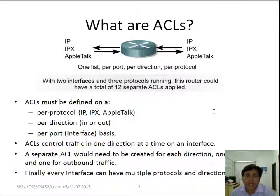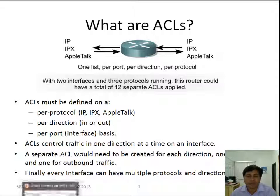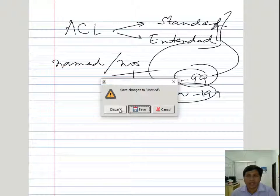ACL works in IP, IPX, and AppleTalk. When we talk about extended ACL, we can have list part code, part protocol, and part direction. ACL must be defined on IP, part protocol, and part direction. ACL controls traffic from one direction to another direction. ACL is actually a group of statements that define whether packets are accepted or rejected from coming from any interface or leaving an interface.